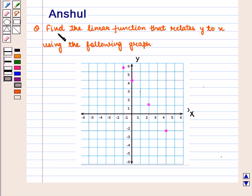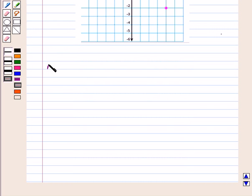Find the linear function that relates y to x using the following graph. We know that a linear function is that function whose graph is a straight line